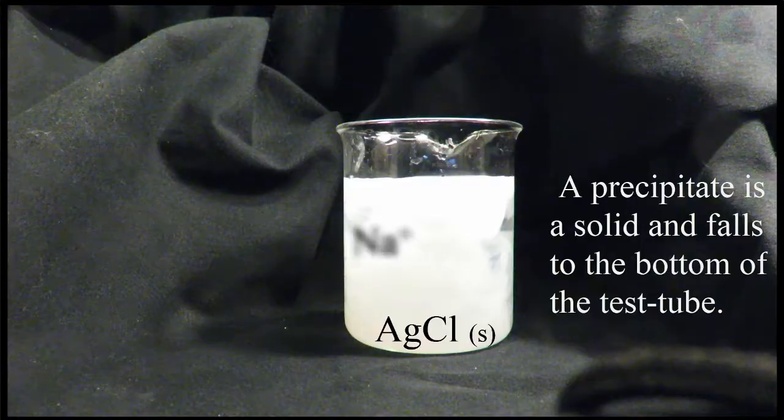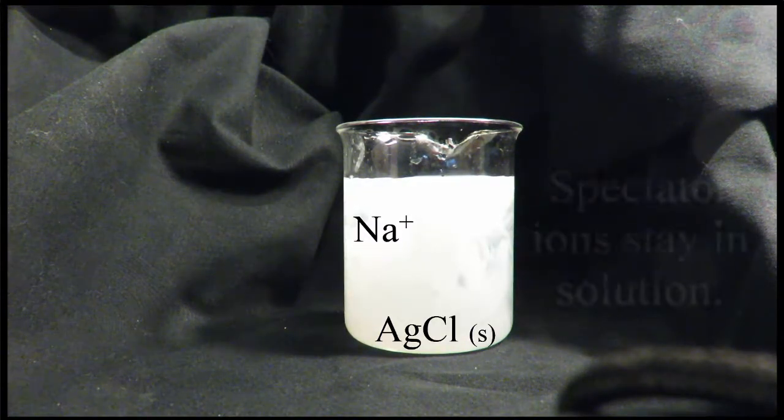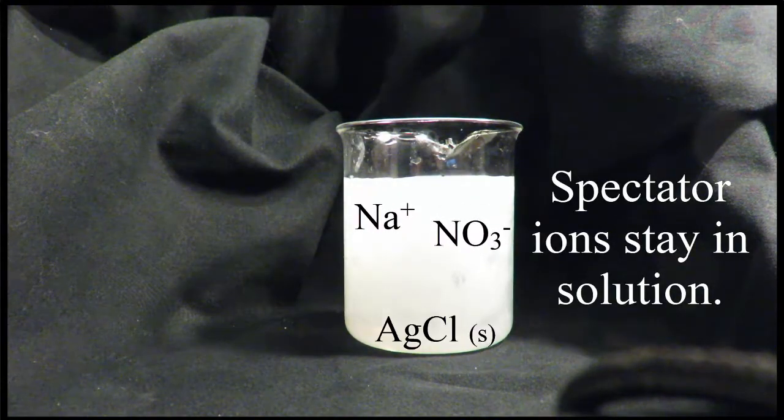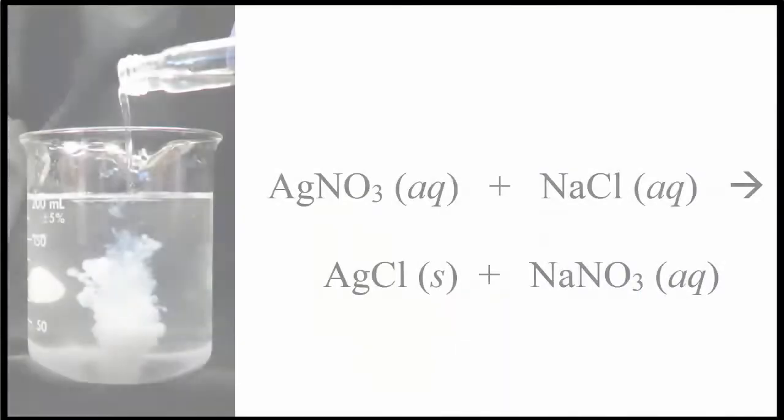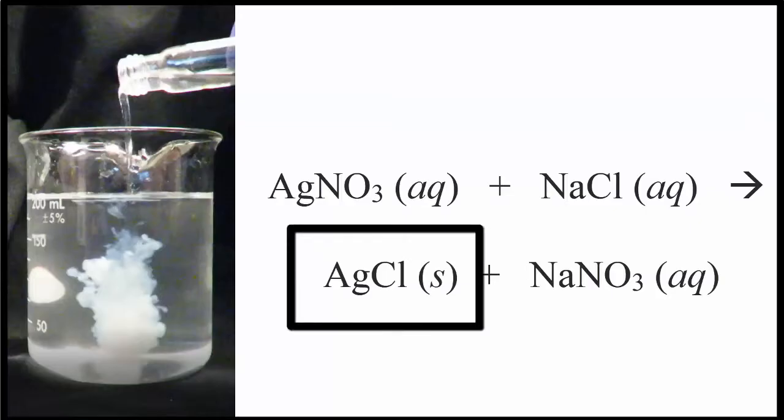It's going to fall over time to the bottom of the test tube or the beaker. And then what's left in solution will be those two ions, the sodium and nitrate ion. So our chemical reaction took place there. And that chemical reaction would look like this. We have our AgNO3 and our NaCl both dissolved in water. They react, and we get that AgCl plus NaNO3.